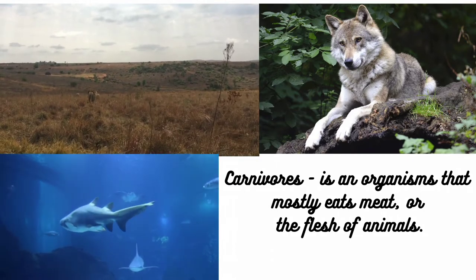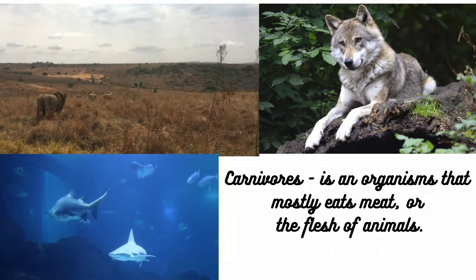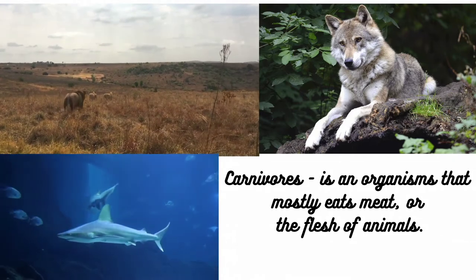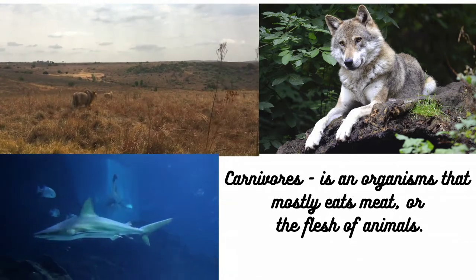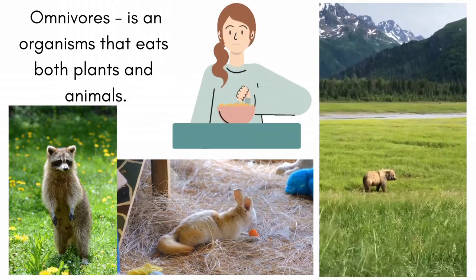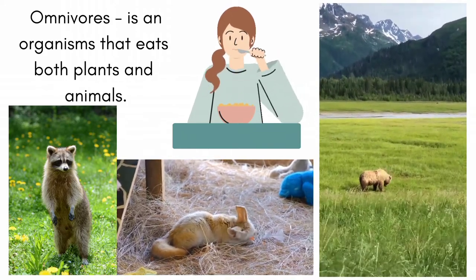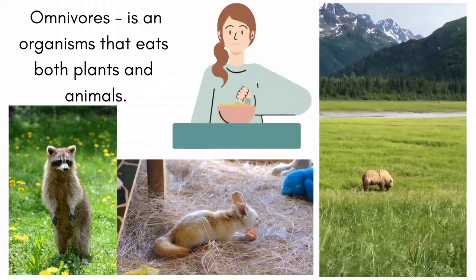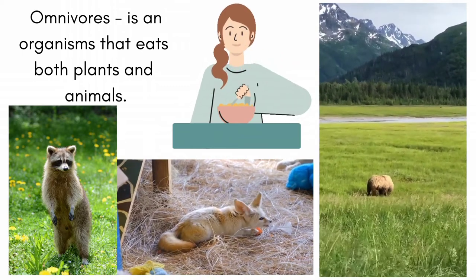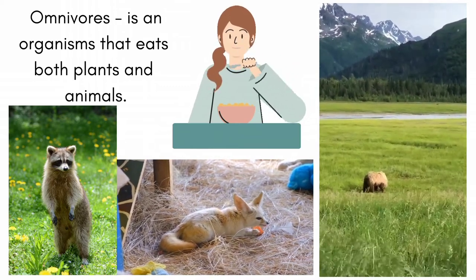Carnivores are a major part of the food web, a description of which organisms eat which other organisms in the wild. An omnivore is an organism that eats plants and animals. The term stems from the Latin words omnis, meaning all or everything, and vorere, meaning to devour or eat.